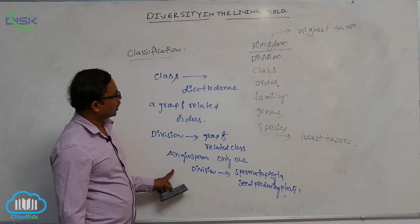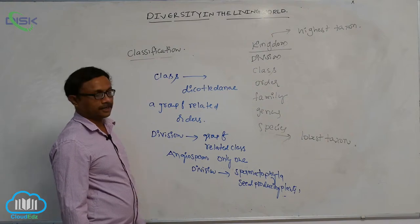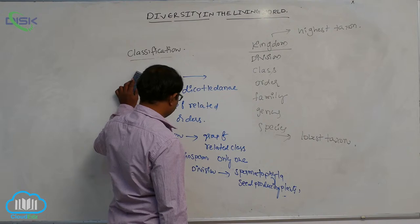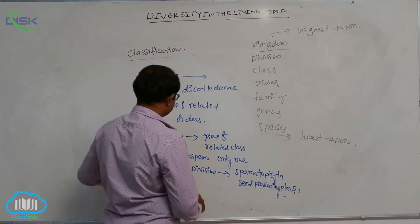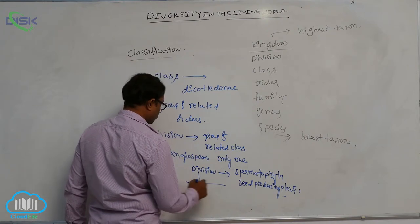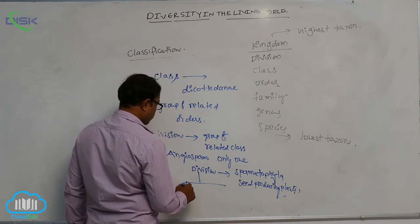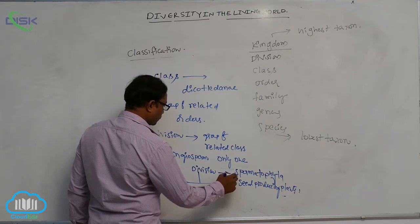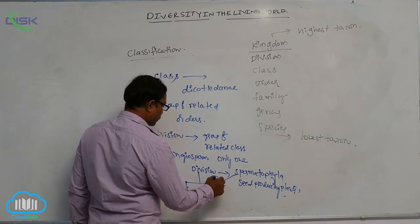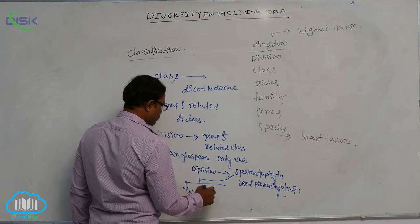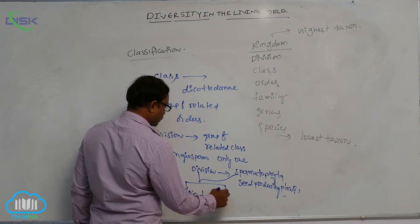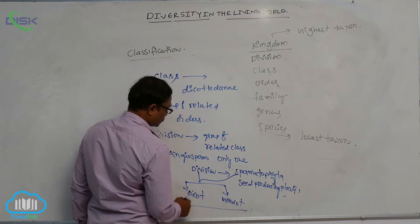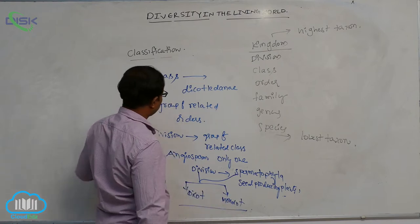After that division, the last one is kingdom. A group of related divisions is known as the kingdom. The division Spermatophyta has two classes: first one is Dicot and second one is Monocot.